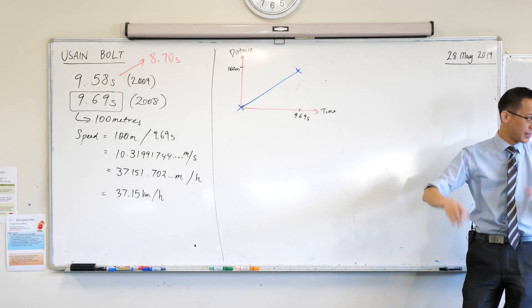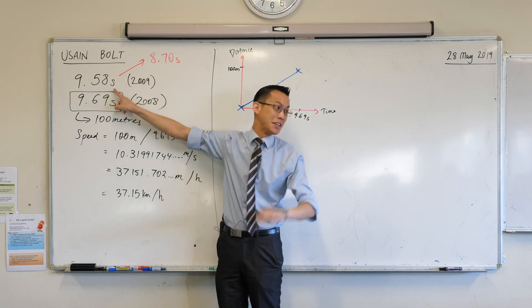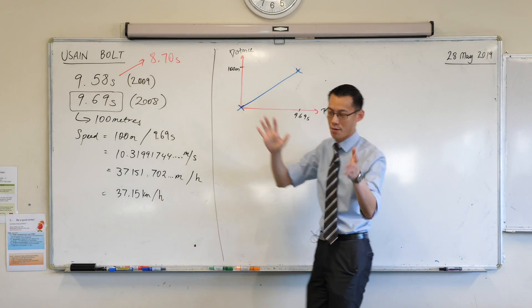And that's why the commentators are all like, what time would he have run if he actually went all the way? Well, we actually, with the benefit of time, we now know what time he would have run if he didn't pull any punches.